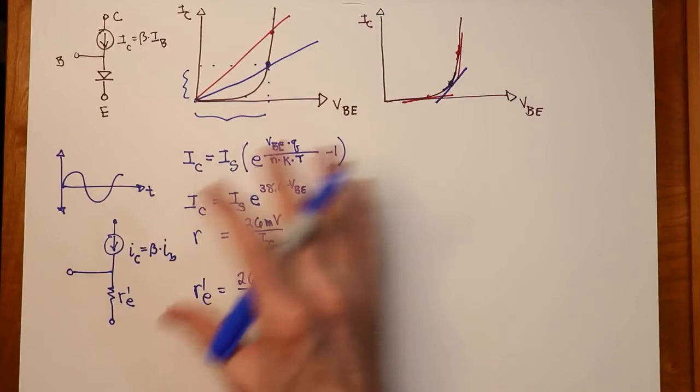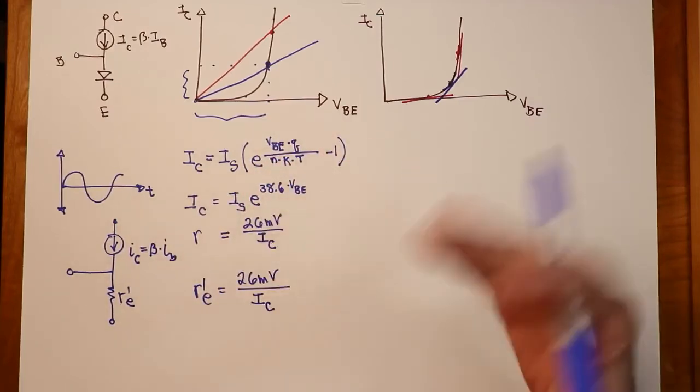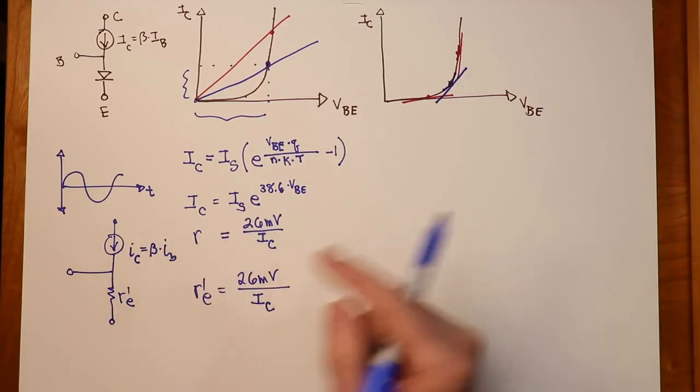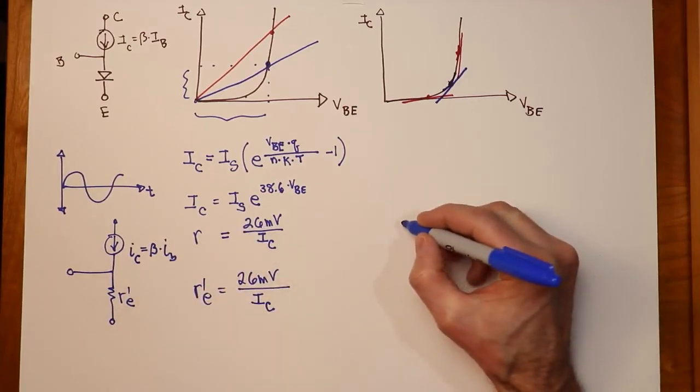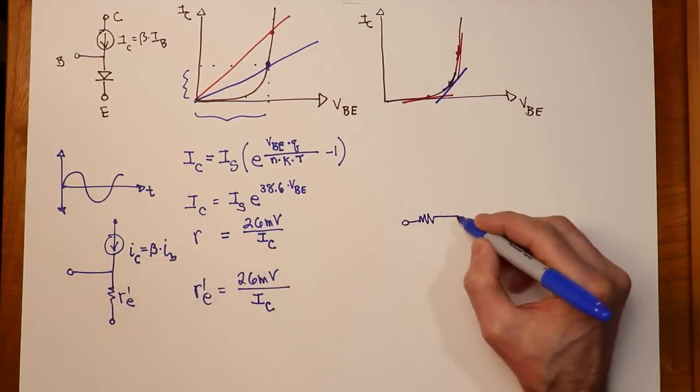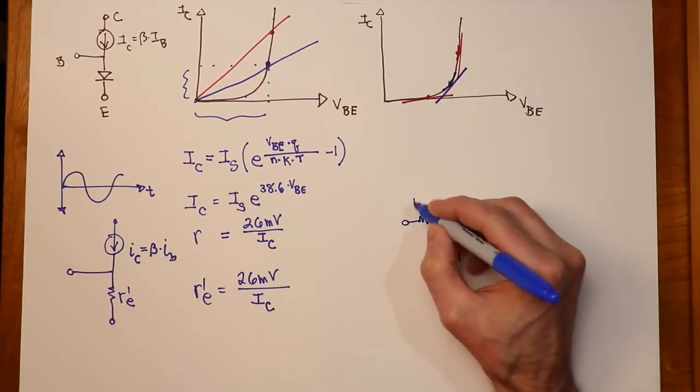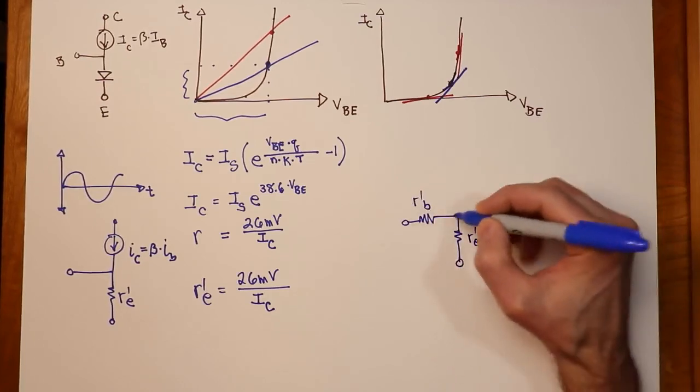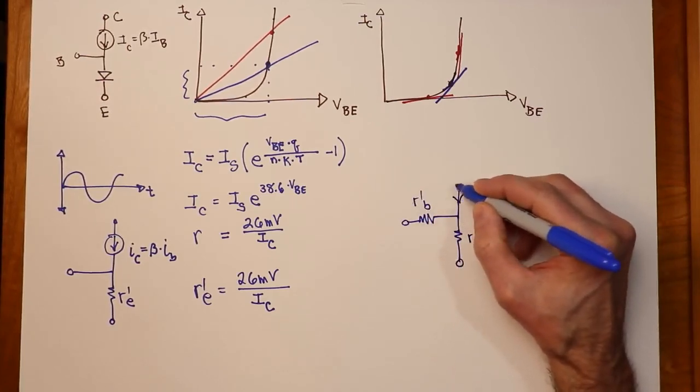This works well for low frequencies, audio frequencies. At very high frequencies, this is not sufficient. There are other characteristics that we would want to include. For example, there is a small resistance associated with the base of the transistor, sometimes referred to as R prime B. We also have some capacitance to deal with.